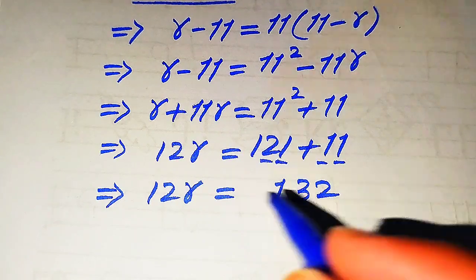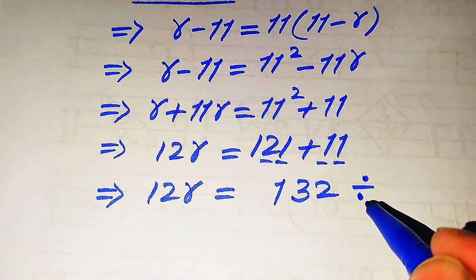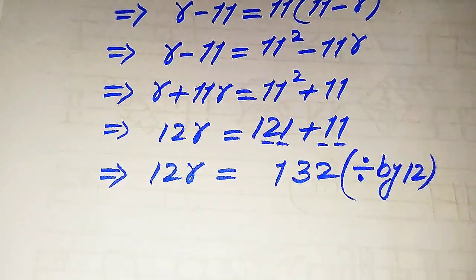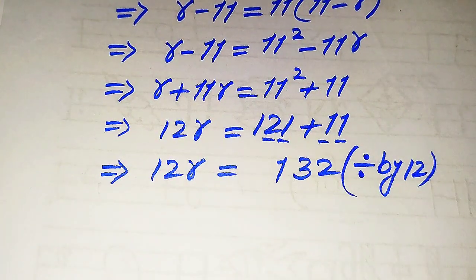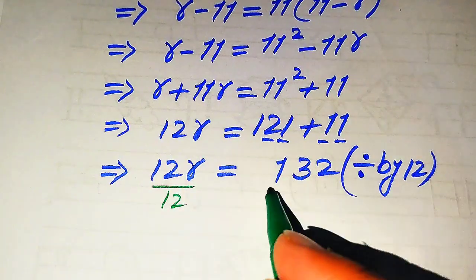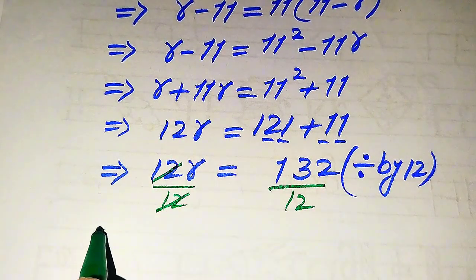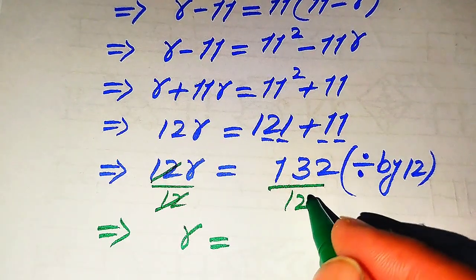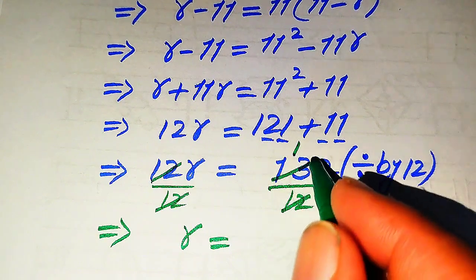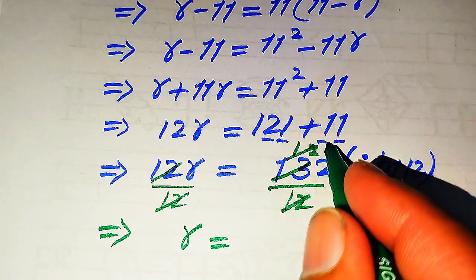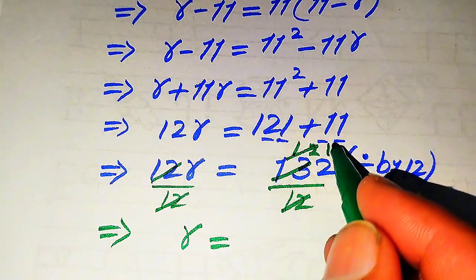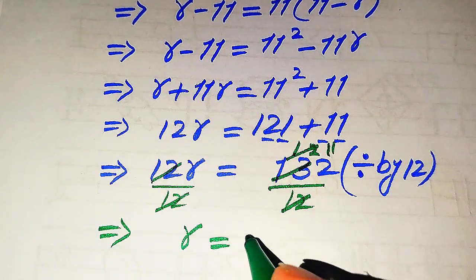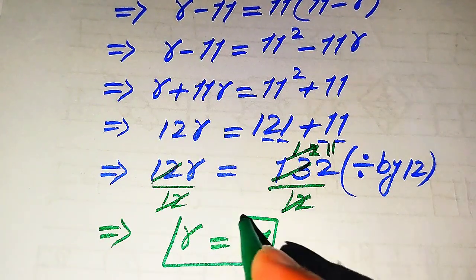To find the value of r, we need to remove the 12 from the left hand side. We divide both sides by 12. The 12 cancels out on the left, and 132 divided by 12 gives us 11, since 12 times 11 equals 132. So we get r equals 11. This is the root of the given equation.